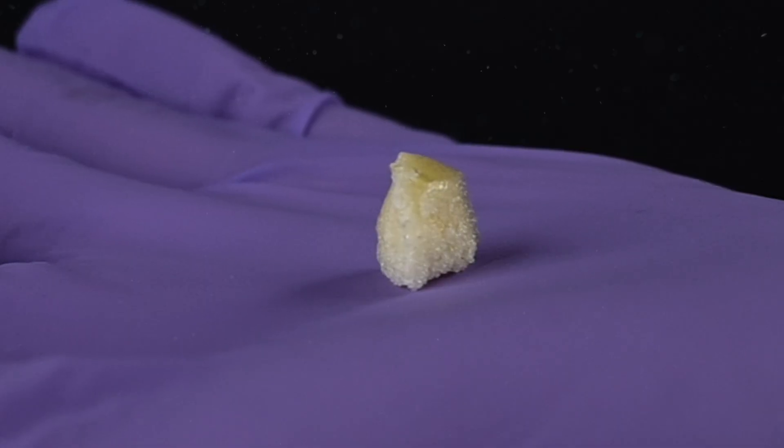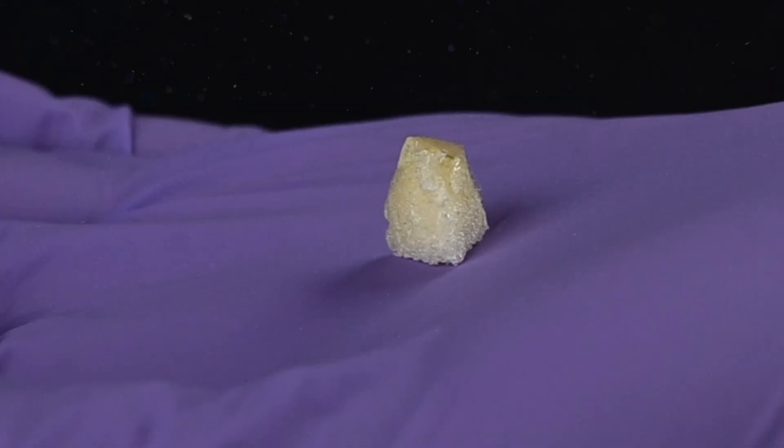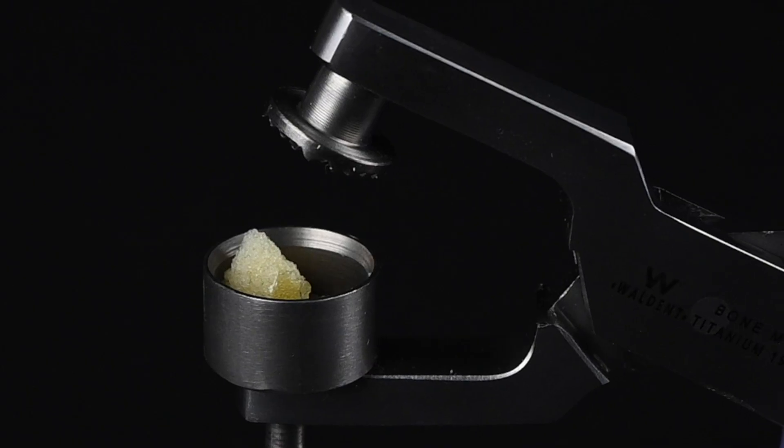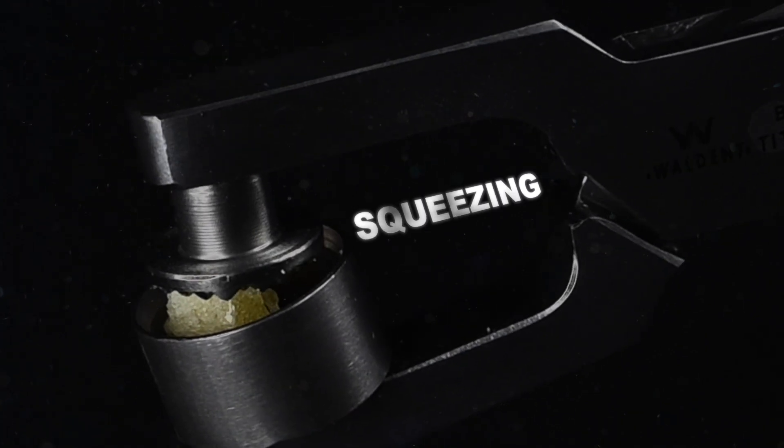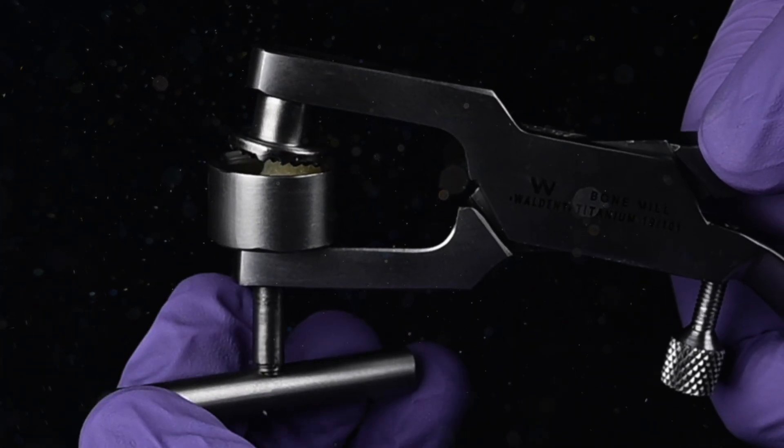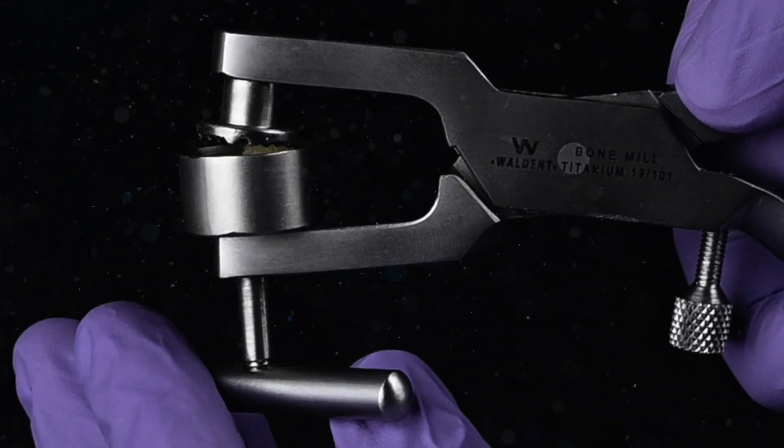Directions to use: To prepare harvested bone, simply place it in the Walden Bone Mill plier well and close the housing by squeezing the handle. Turn the T-handle to break the bone into small pieces using the textured titanium surfaces.